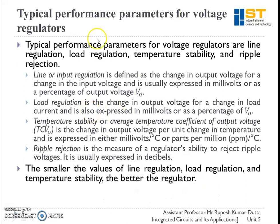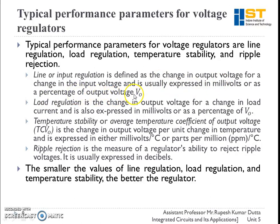These are the typical performance parameters of voltage regulators that must be considered when selecting a regulator. The parameters are: line regulation, load regulation, temperature stability, and ripple rejection. Line regulation is defined as the change in output voltage for a change in input voltage, expressed in millivolts or as a percentage of V_out. Load regulation is the change in output voltage for a change in load current, also expressed in millivolts or as a percentage of V_out.